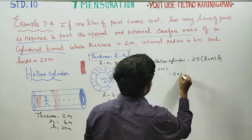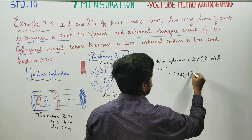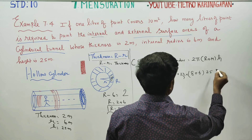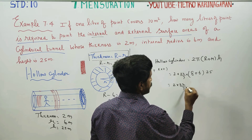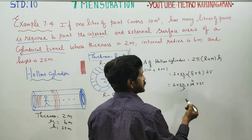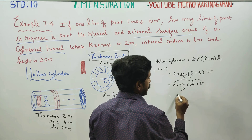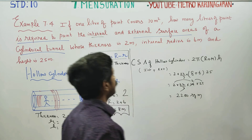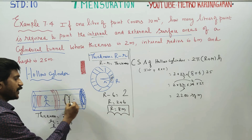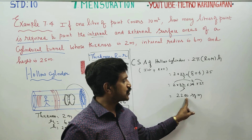Total surface area equals 2 × (22/7) × (capital R + small r) × height. Capital R is 8, small r is 6, height is 25. So: 2 × (22/7) × (8 + 6) × 25 = 2 × (22/7) × 14 × 25. The 7 and 14 cancel to give 2, so 2 × 22 × 2 × 25 = 4 × 25 × 22 = 100 × 22 = 2,200 square meters.